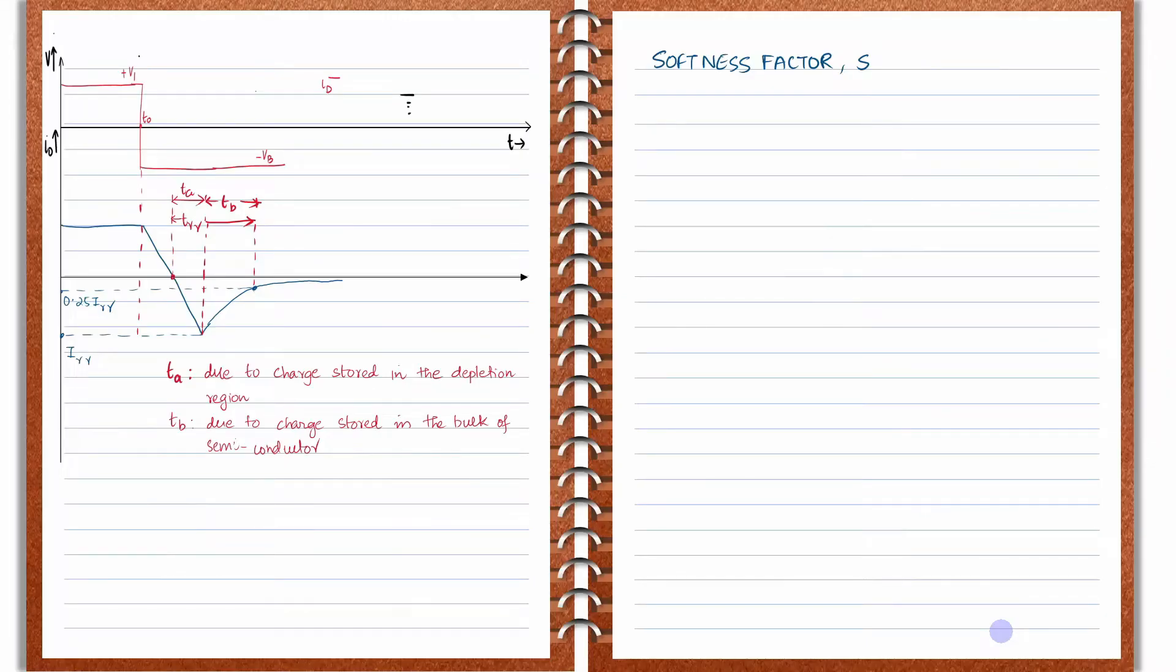Hello friends and welcome to the lecture series of power electronics in the Electrical is Easy channel. Today we are going to discuss a very small topic called softness factor. This should have been discussed when we were discussing the reverse recovery characteristics of the diode, but nevertheless, better late than never. So let us discuss today something called softness factor.